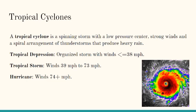A tropical cyclone is a spinning storm with a low pressure center, strong winds, and a spiral arrangement of thunderstorms that produce heavy rain. Tropical depressions, tropical storms, and hurricanes are all tropical cyclones. A tropical depression is an organized storm with winds less than or equal to 38 miles per hour. A tropical storm is more organized with winds of 39 to 73 miles per hour. A hurricane is very organized with winds of 74 and higher miles per hour.